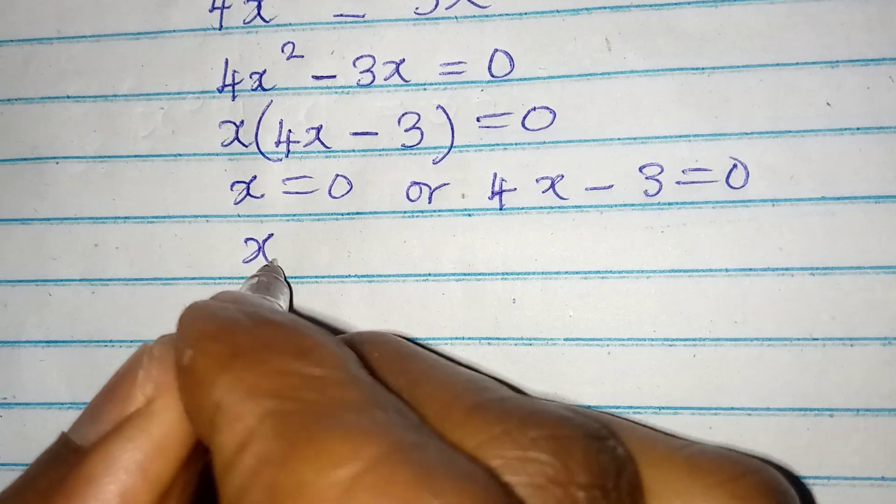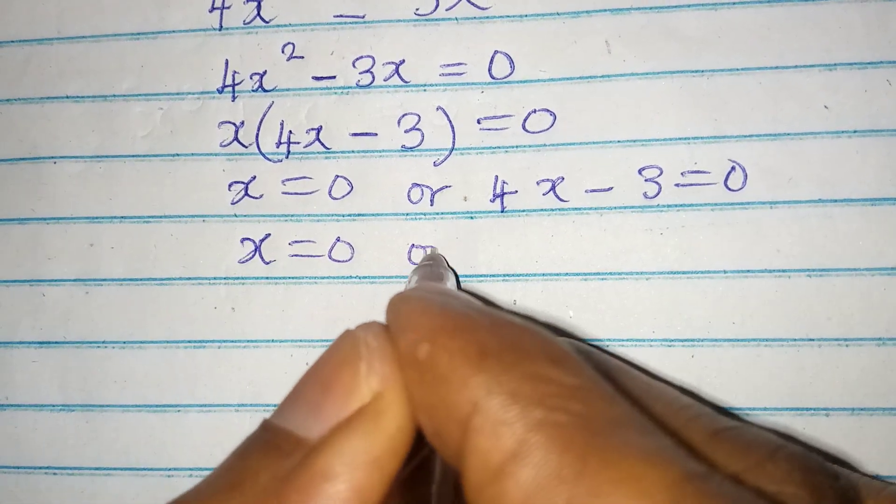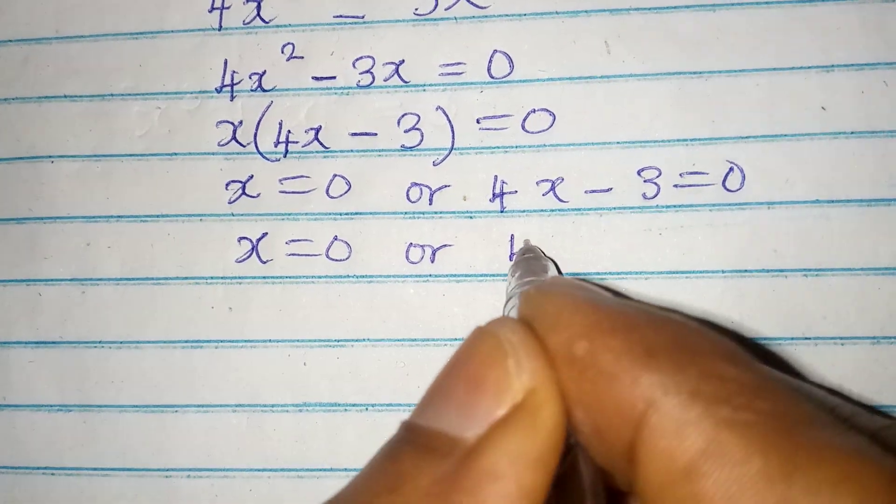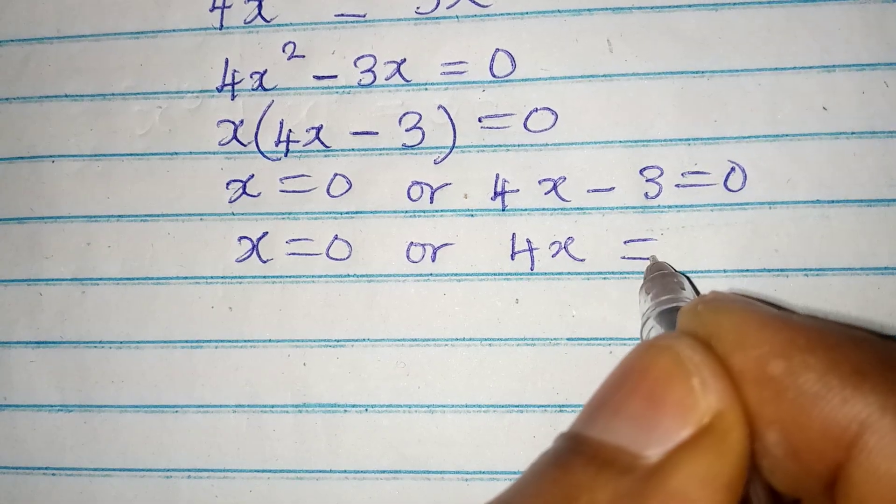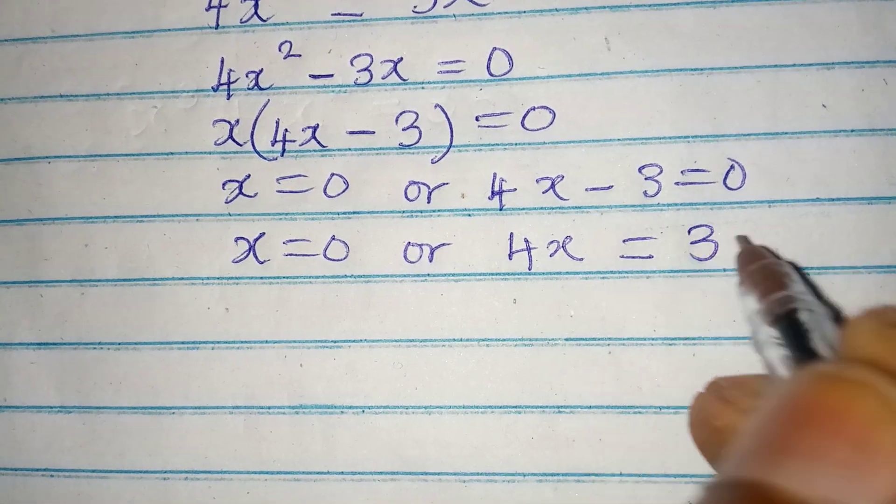Now x here remains 0, and on this side 4x is equal to 0 plus 3, and that is 3.